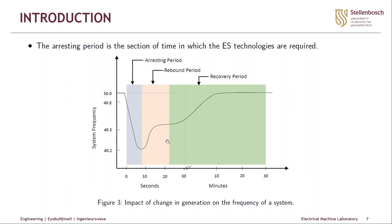Figure 3 shows the impact of a generation loss on the frequency of a system. As the frequency decays, we have an arresting period of less than 10 seconds, a rebound period of 10 to 20 seconds, and then a recovery period. Under primary response, systems are required to respond in less than 10 seconds in order to capture this decay in frequency. The system should also be capable of handling over-frequency events.